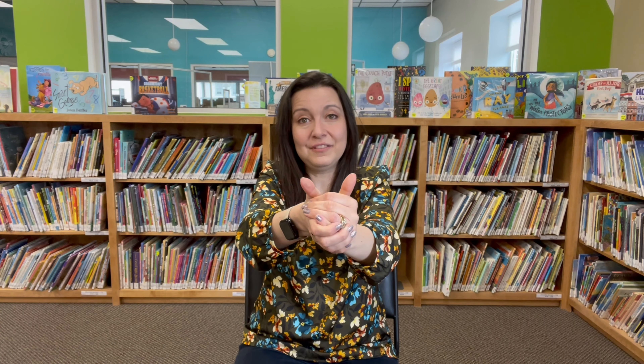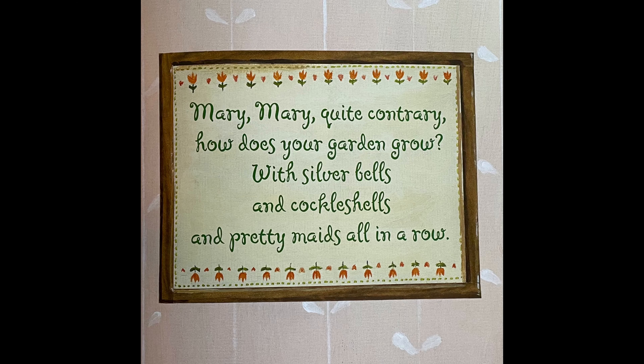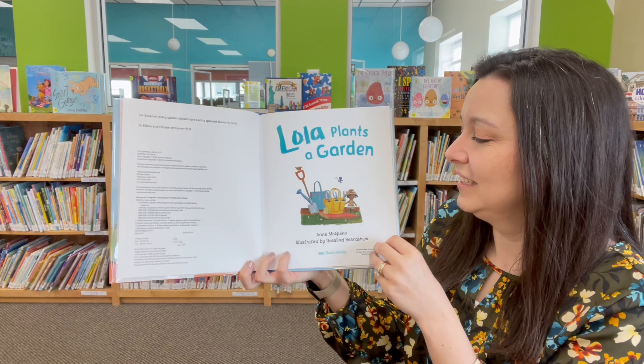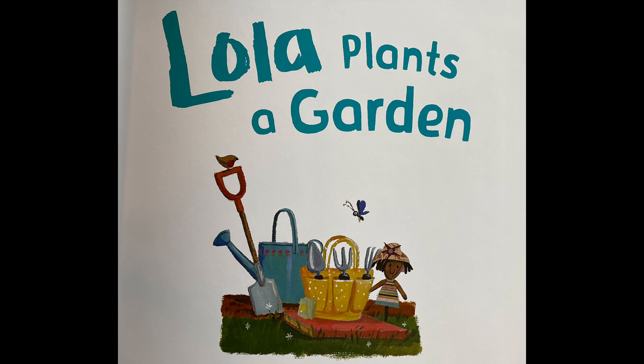Our story today is called Lola Plants a Garden and it's by Anna McQuinn; the illustrator is Rosalyn Beardshaw. Remember, the author writes the words and the illustrator draws the pictures. Mary, Mary, quite contrary, how does your garden grow? With silver bells and cockle shells and pretty maids all in a row. Lola Plants a Garden.